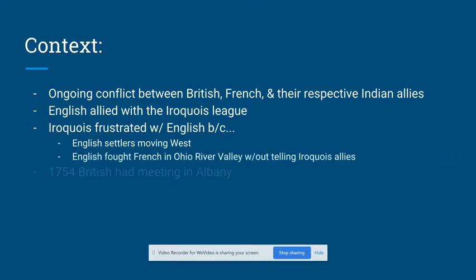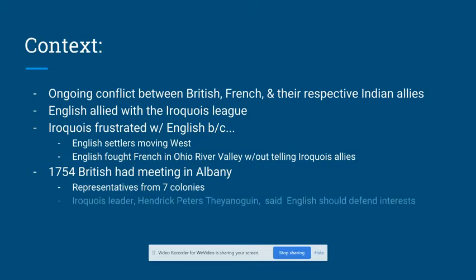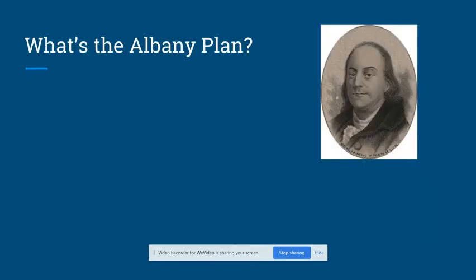So, in 1754, in order to ease tensions between the Indians and the British, the British called a meeting in Albany with representatives from seven colonies. And at that meeting, an Iroquois leader said that the English should do a better job of protecting their interests.